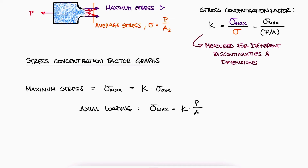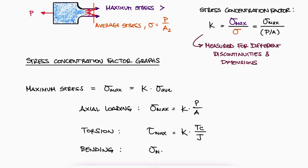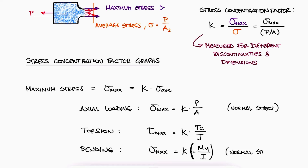We will find stress concentrations for all types of stresses. For example, stress concentration factors for torsional stresses will be multiplied by the shearing stress expression for torsion to find the maximum torsional shearing stress at the location of the stress concentration. The same is true for normal stresses due to bending — the maximum stress at the stress concentration location would be K times the bending normal stress expression. Some textbooks differentiate stress concentration factors by using Kt for normal stress concentration factors and Kts for shearing stress concentration factors.